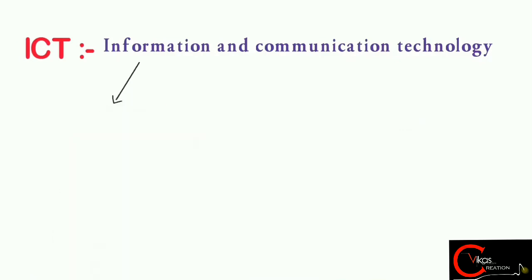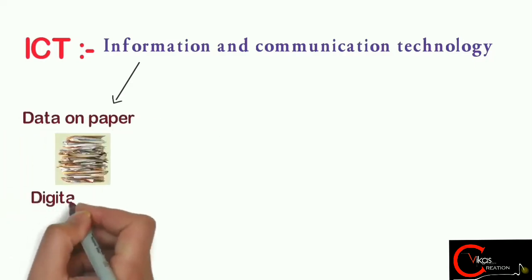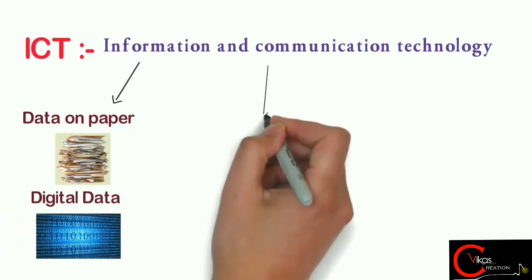What is information? Information is knowledge that you get about someone or something, or you can say facts or details about a subject. It may be in the form of data on paper or data in digital form.